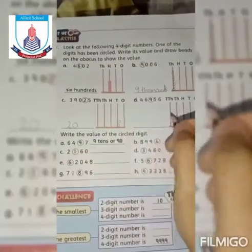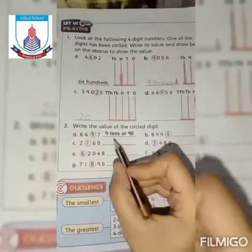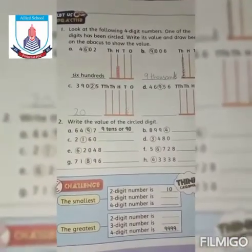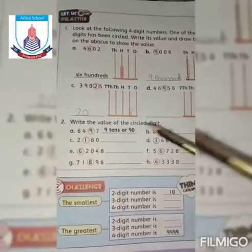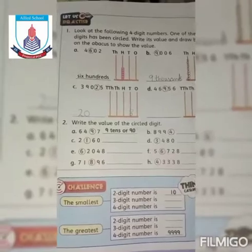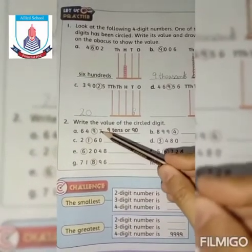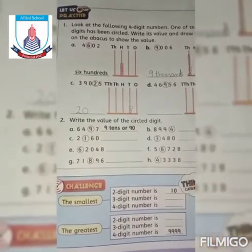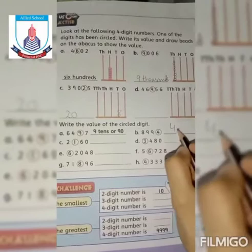To aapne wo khud solve kar lena hai. Question number 2 dekhe: Write the value of the circled digit. So students, ismein bhi aapne jo circled value - beads draw nahi karna hai, yahan aapne uski value likhni hai, theek hai, ki wo kaun si place pe aa rahi hai. Jaise ki agar yeh 1s se uske baad 10s to 9 tens likhna hai, theek hai, 9 tens. Is tarah yeh 1s pe aa rahi hai to 4 ones likhni hai.